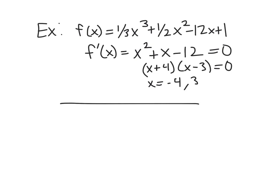So what I meant by the next part is divide the real line into subintervals. So you can make basically a little sign chart here. So we've got our critical values at negative 4 and 3.